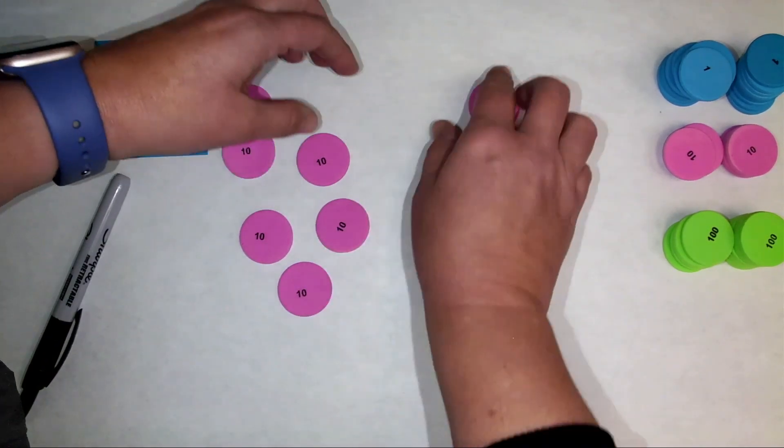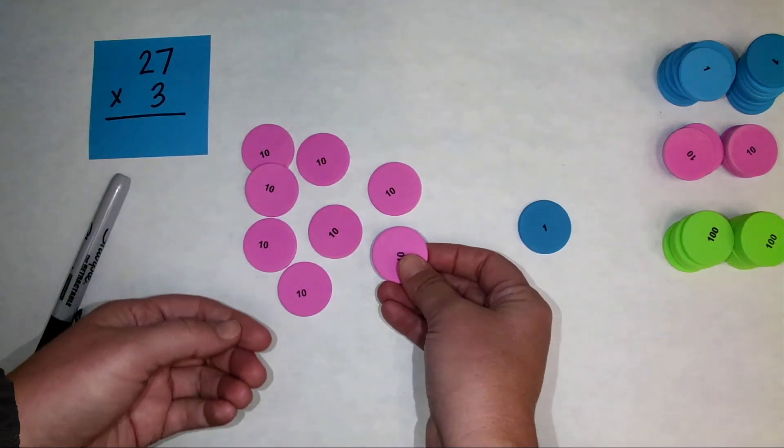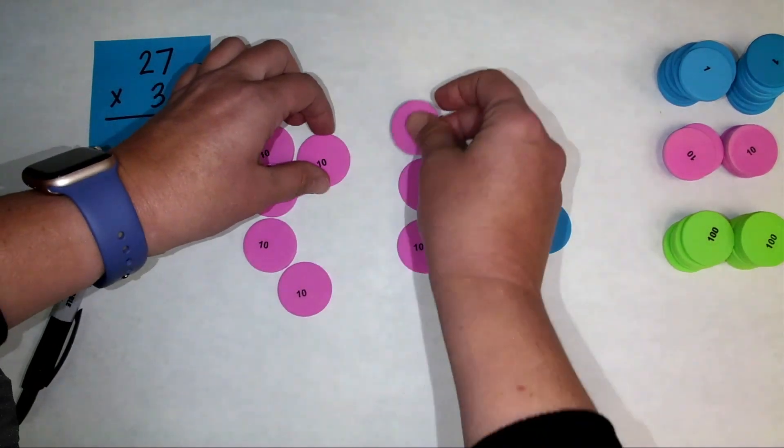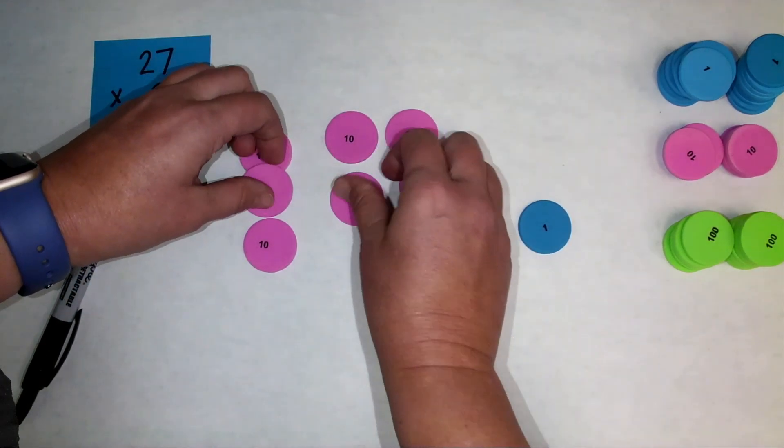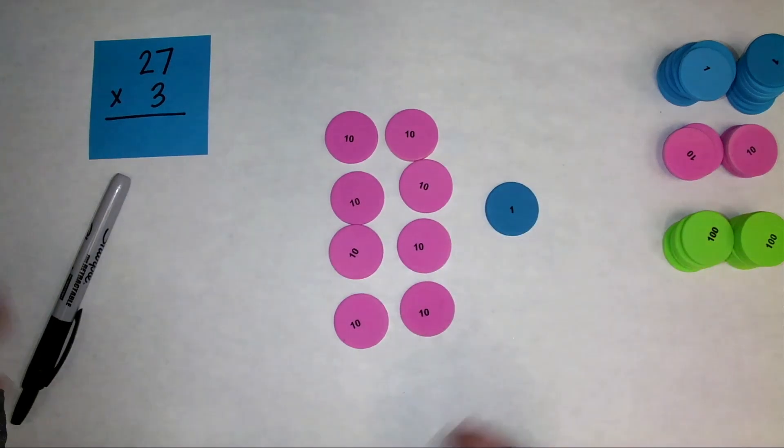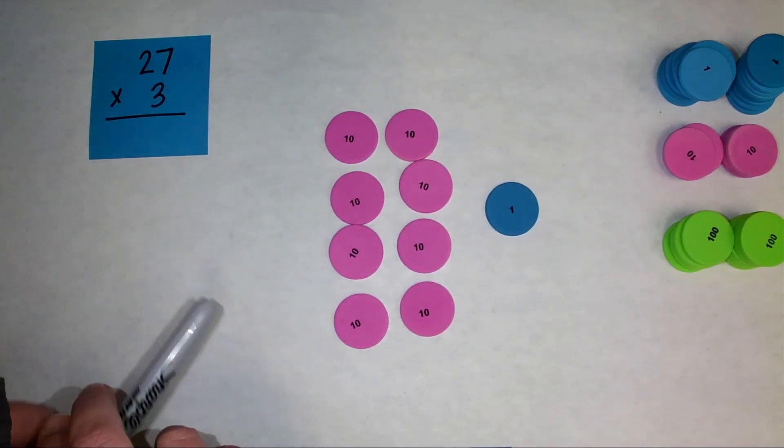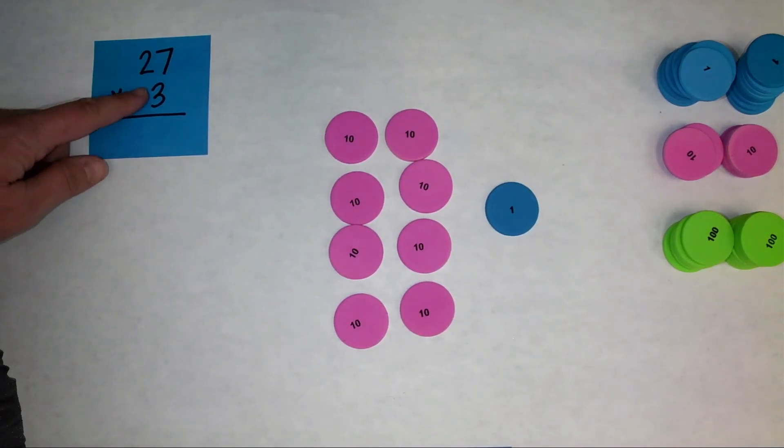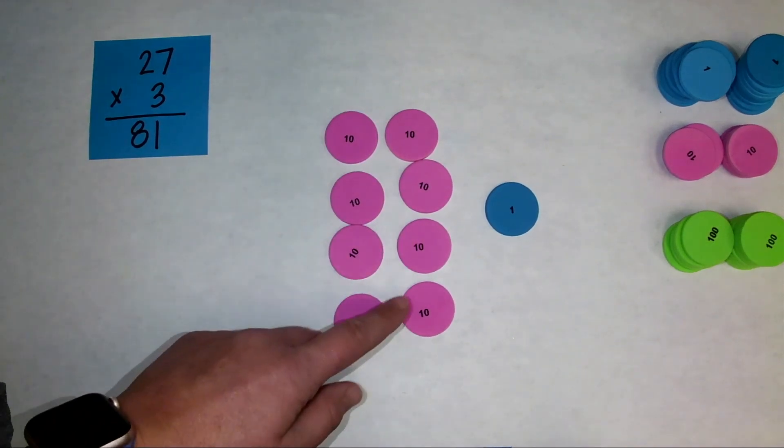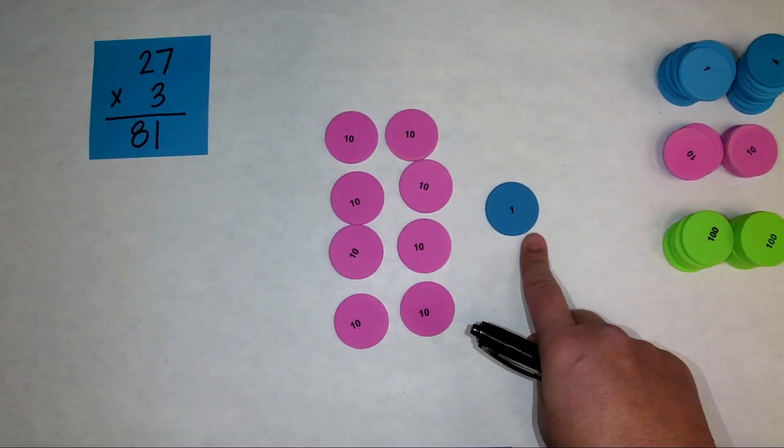And then I'm going to bring together all of my tens. And let's see if I have more than nine tens, see if I have to regroup. I have one, two, three, four, five, six, seven, eight tens. Don't have to do any regrouping there. So when I multiply 27 times 3, my product is 81. I have eight tens and one one.